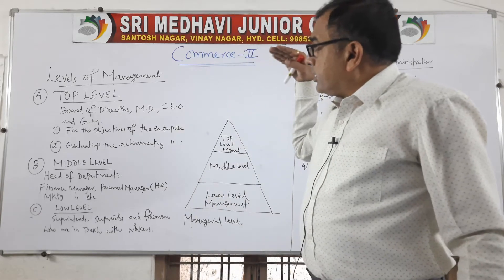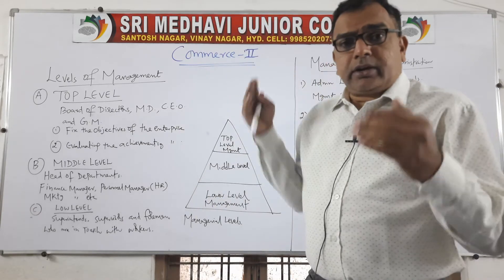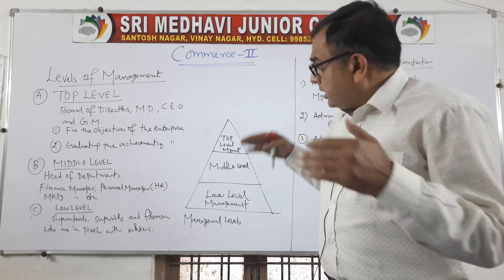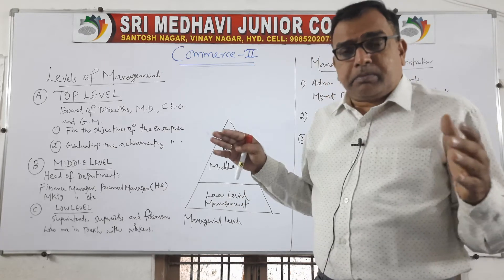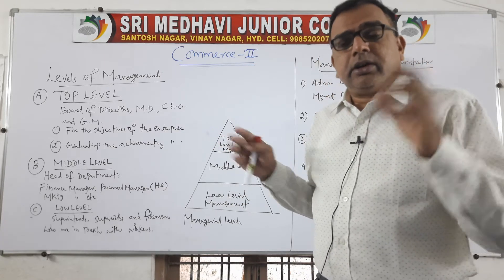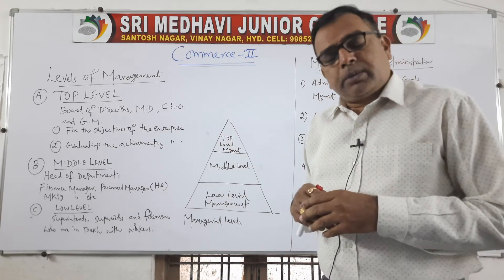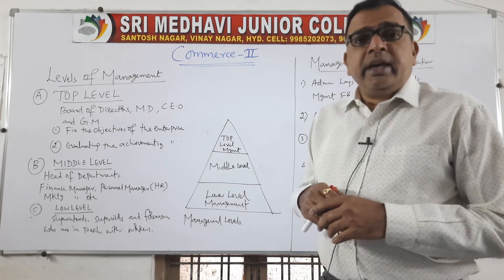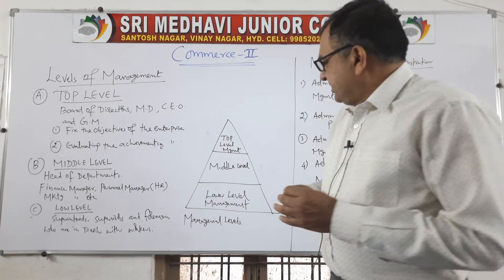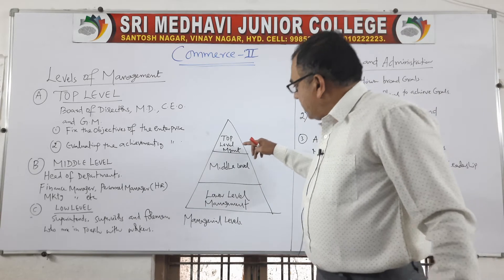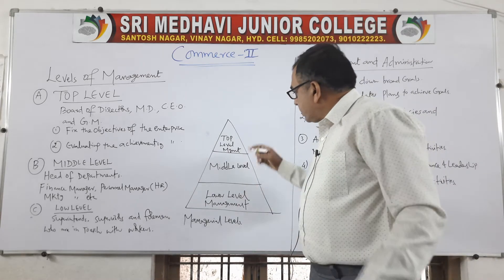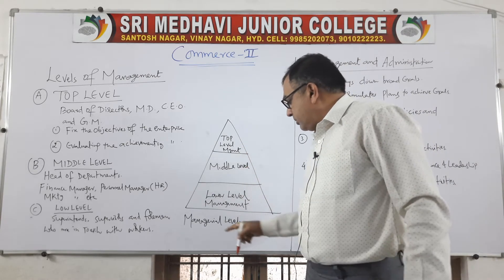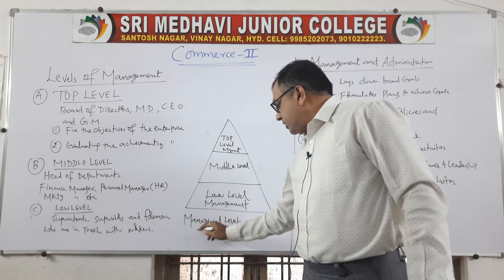Whenever you look at the management levels in any organization — particularly joint stock companies and multinational corporations — we see three levels of management: top level, middle level, and lower level management. These are called managerial levels.